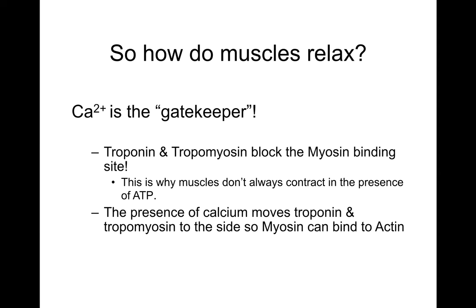If the bound state is energetically favorable, how do muscles relax? Here's where calcium comes in — calcium is the gatekeeper, or the gate opener. Troponin and tropomyosin are there all the time to block the myosin binding site, which is why muscles don't always contract in the presence of ATP. If myosin wants to bind and there's ATP around, your muscles would just start to contract, and you don't want that — you want to be able to control it.